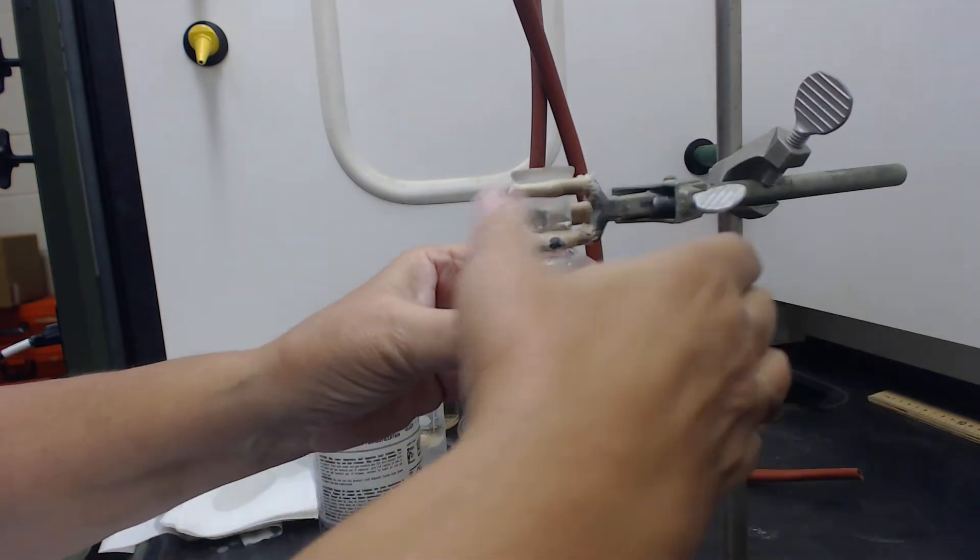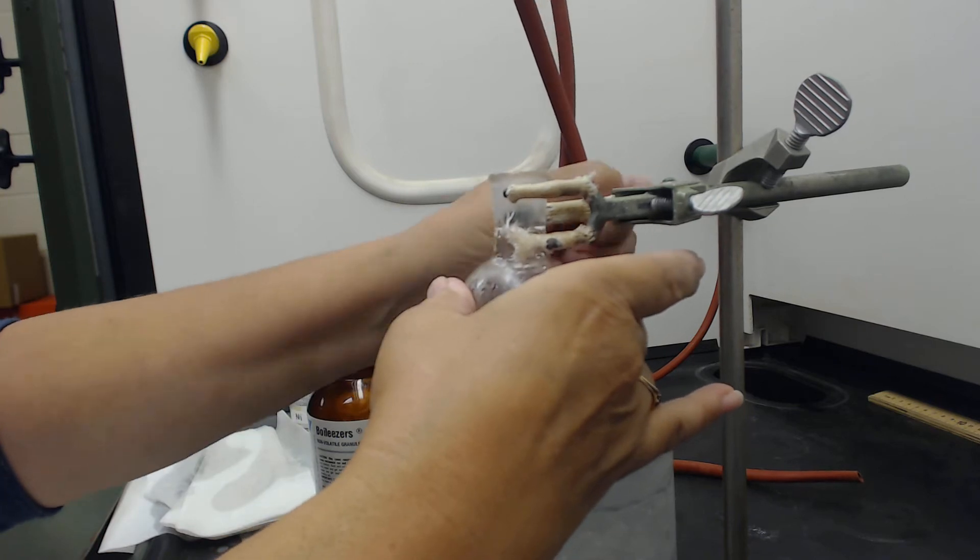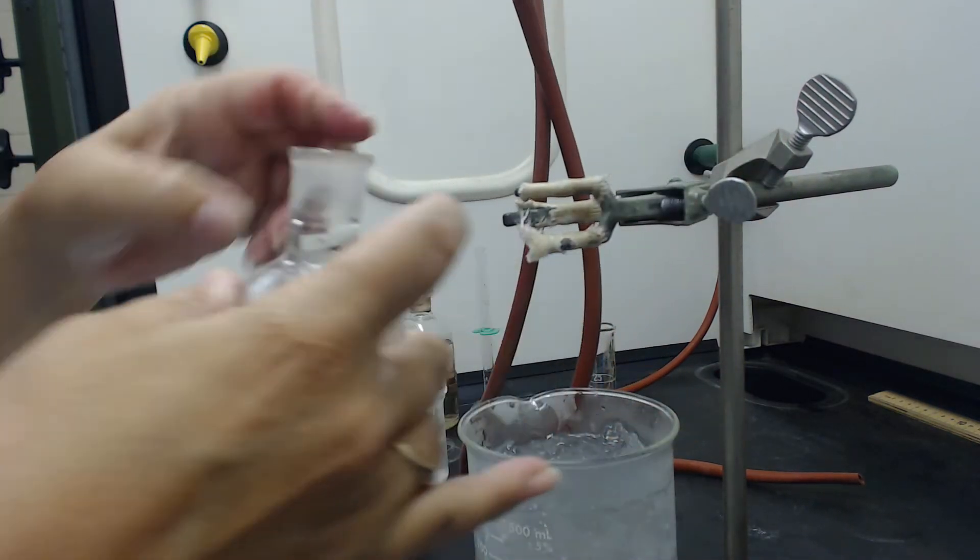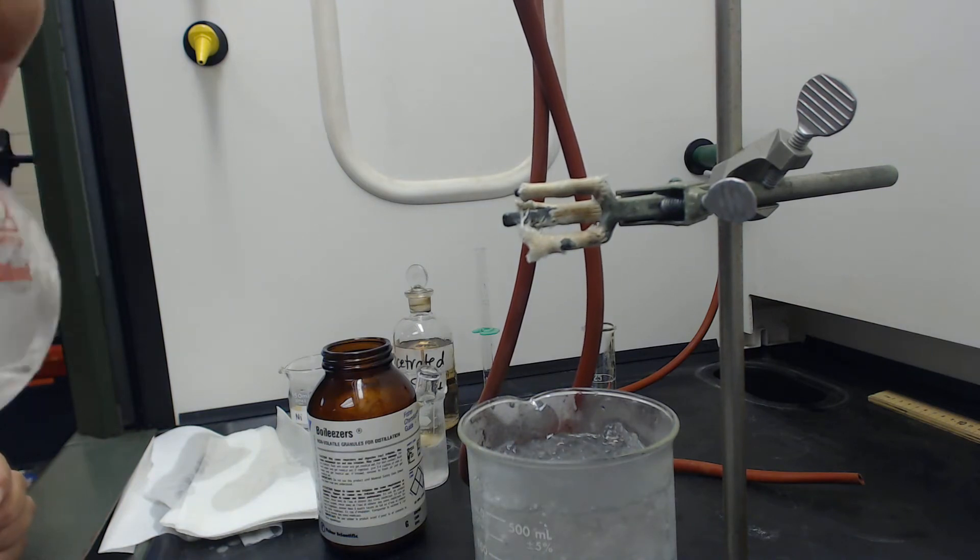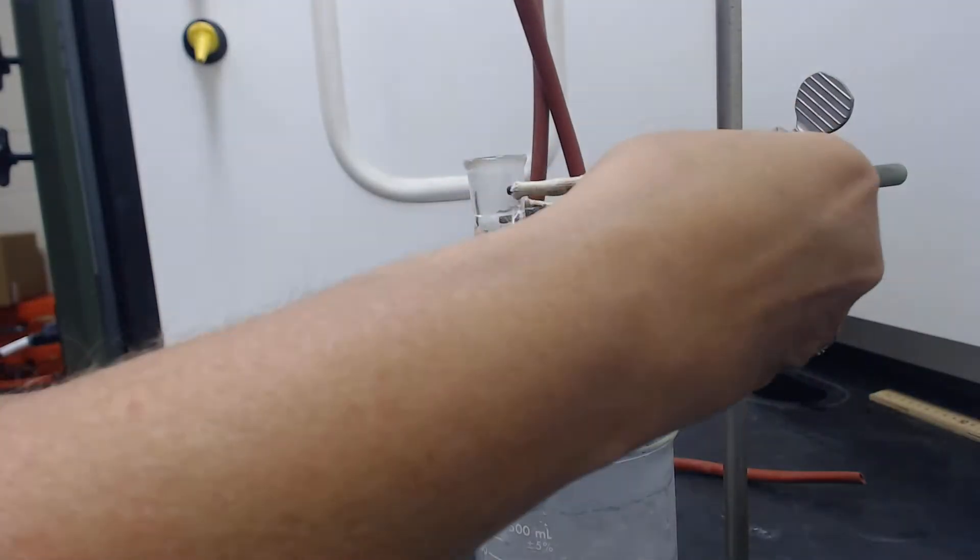Now I've added the 10 milliliters. Let me stir it a little bit. It's hard to stir. Some people have a stir bar put into here. Let me just give it a little mix, make sure it's all mixed well.